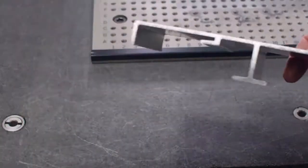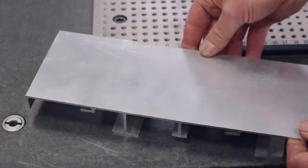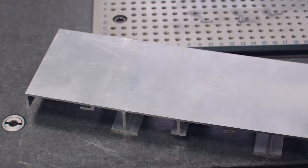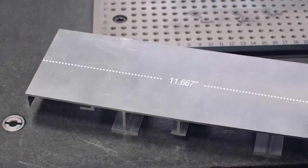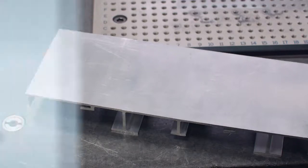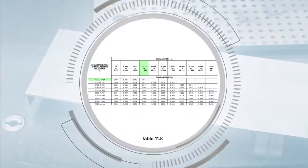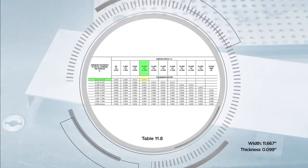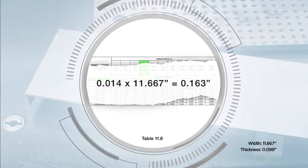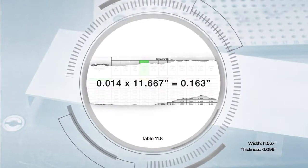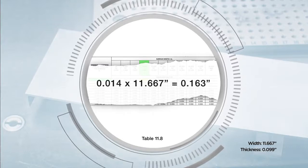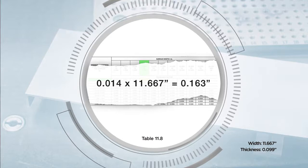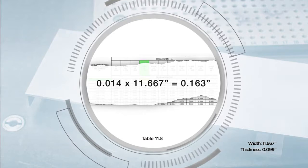Now we'll walk through how to determine the allowable flatness tolerances on solid and hollow profiles. Starting with this solid profile, you will need to know the wall thickness and width dimensions. In this example, the width is 11.667 inches and the wall thickness is 99 thousandths of an inch. Using Table 11.8, the applicable tolerance is 14 thousandths of an inch per inch. To determine the total allowable flatness tolerance across the 11.667 inch width, multiply 14 thousandths by 11.667 inches to get 163 thousandths of an inch.